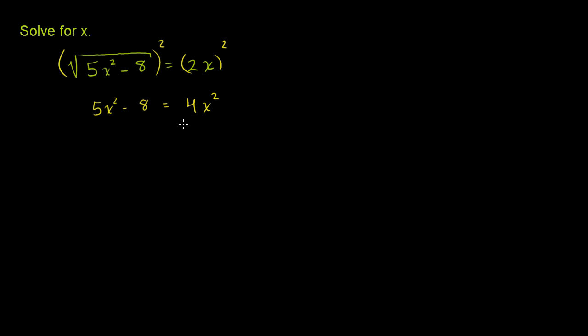Now we have a quadratic. Let's see what we can do to maybe simplify this a little bit more. We could subtract 4x², or actually even better, let's subtract 5x² from both sides so that we just have all of our x terms on the right-hand side.